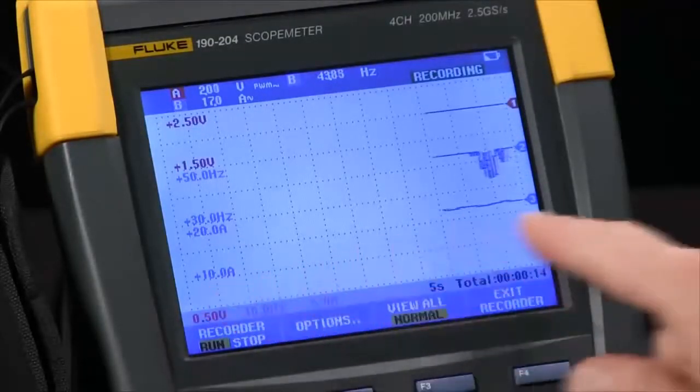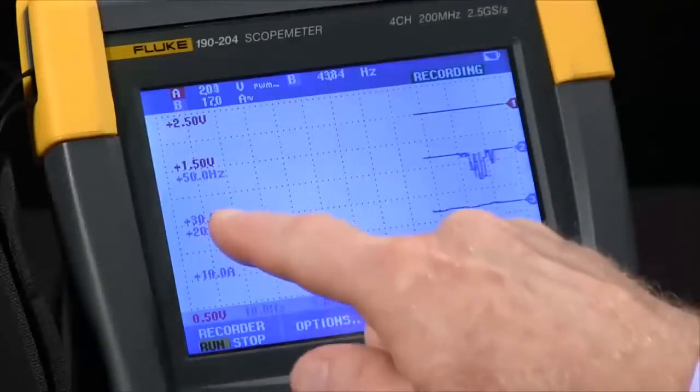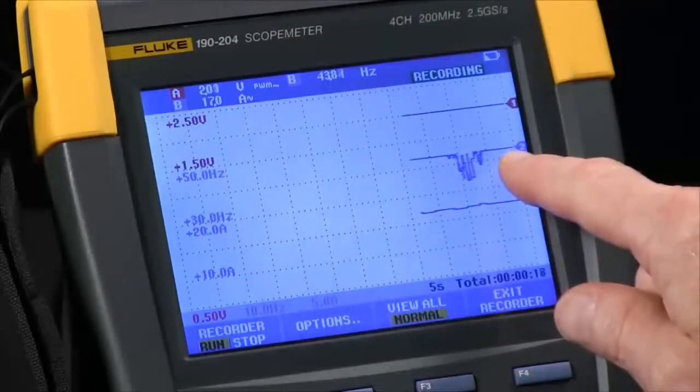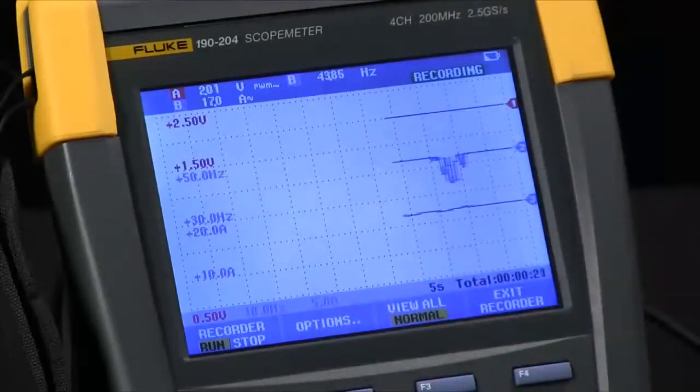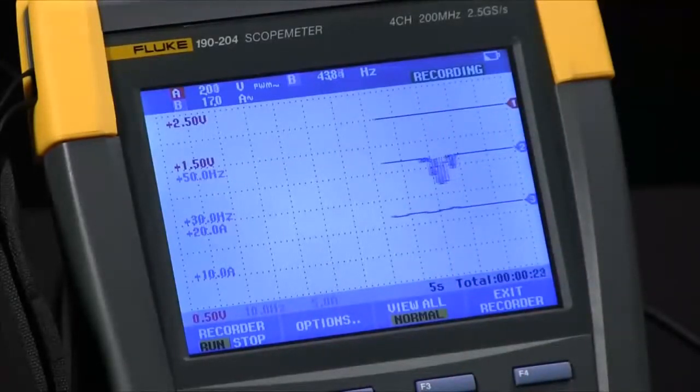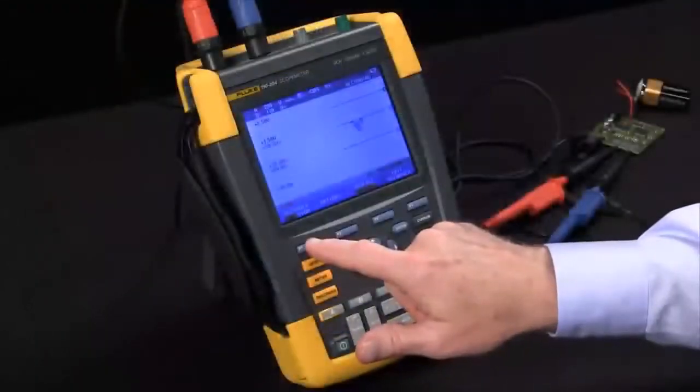You can see your amperage is the bottom trace, your frequency on channel B is the middle one, and your voltage being the top. When you're ready to stop, you hit F1 to stop the recording.